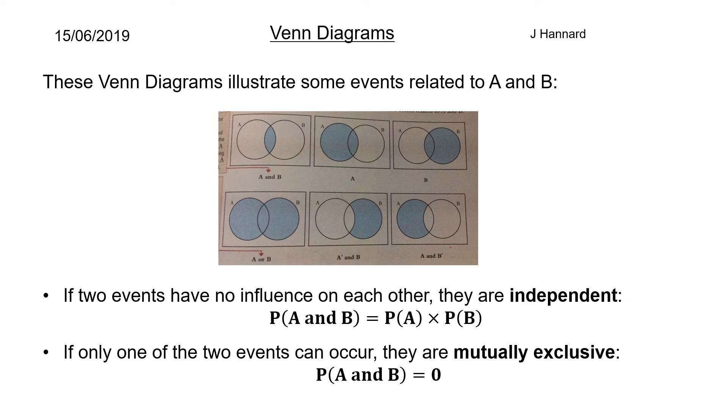If only one of the two events can occur they are mutually exclusive. So the P of A and B is zero.